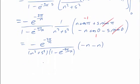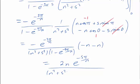So that simplifies to 2n e to the minus s π over n, n squared plus s squared, into 1 minus e to the minus s π over n.